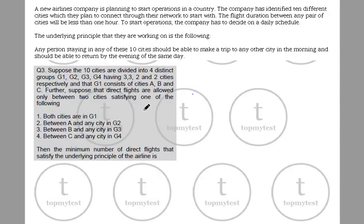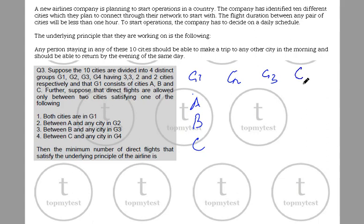Suppose the 10 cities are divided into four distinct groups G1, G2, G3, G4 with three, three, two, and two cities respectively. G1 consists of cities A, B, C. So you have G1 with A, B and C; G2 with three cities; G3 with two cities; and G4 with two cities.